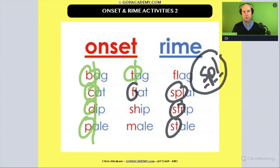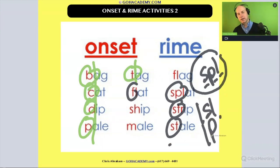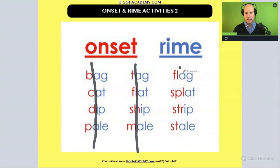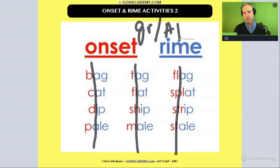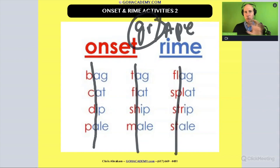If a child were to break down 'splat' into an onset and rhyme, or 'stale' into an onset and rhyme, and they said 'splat' — 'spl' / 'at,' 'stuh' / 'stale' — they are breaking it into onset and rhyme, but they're not going the extra distance of isolating s-p-l individually. So if you ever see an activity where a child breaks up the initial sound before the vowel — like 'gruh' / 'ape' — that would be an onset and rhyme activity.